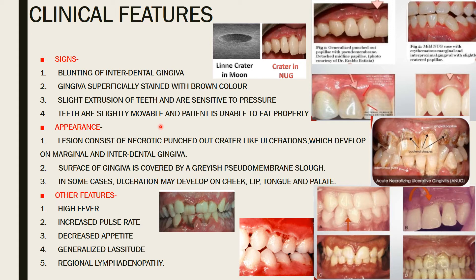The lesion consists of necrotic, punched-out, crater-like ulcerations which develop on the marginal and interdental gingiva. The surface of the gingiva is covered by gray pseudomembranous slough. In some cases, ulcerations may also develop on the cheeks, lips, tongue, and palate.